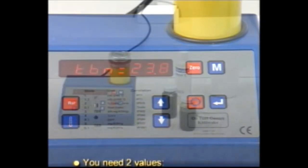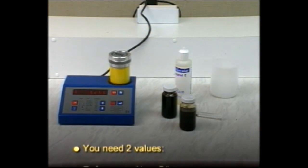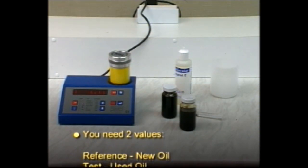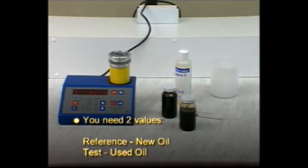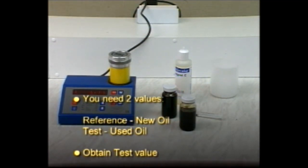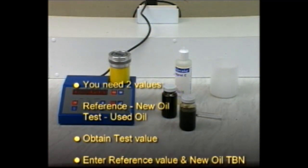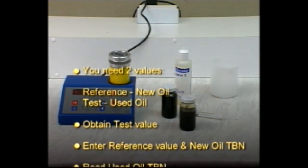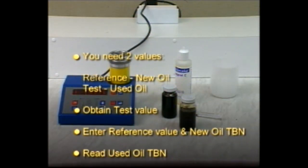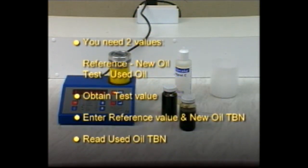To summarize, you need two values: the reference value from new oil and the test value from used oil. The used oil sample will provide the test value. Enter the reference value and new oil TBN. Read the used oil TBN.